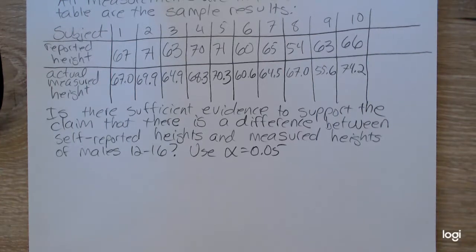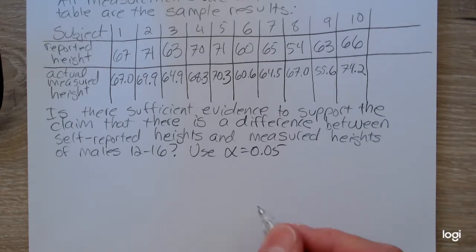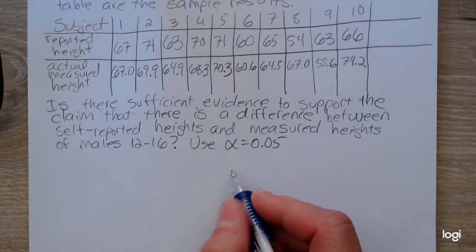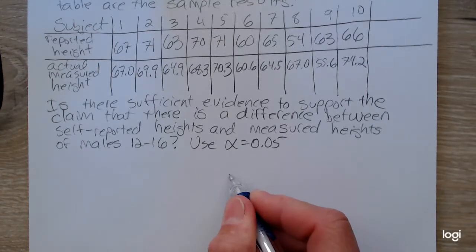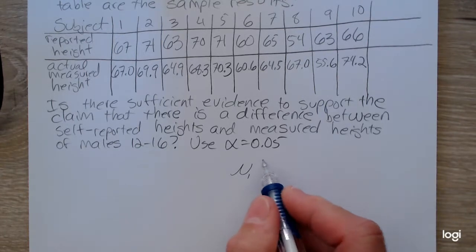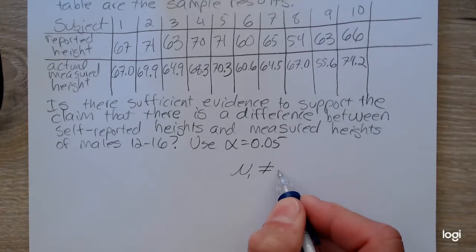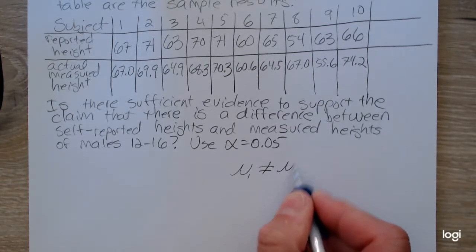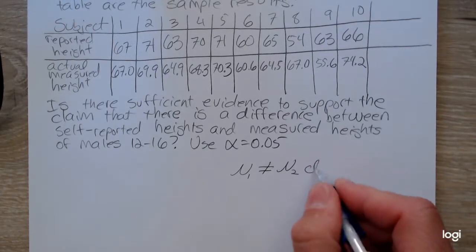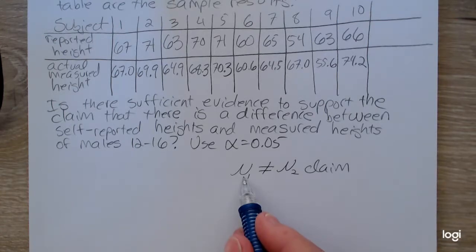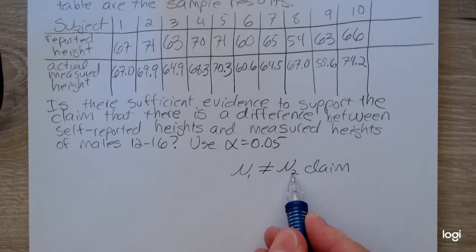Going back to the claim, the claim is that there is a difference between self-reported heights and measured heights. If we treat the reported heights as the first sample, we have mu sub 1. And if there is a difference, the average for the measured height, mu sub 2, would not be the same. So this is the claim: the reported average height is different than the actual measured height.